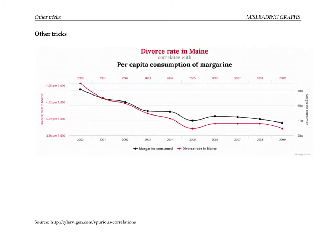Finally, what do you think about this graph? It shows the divorce rate in Maine as a red line, and per capita consumption of margarine — let's assume also in Maine — as a black line. The lines certainly track with each other, but putting them together on the same chart seems to imply there might be a causal relationship, which would be bizarre. In fact, if you look a little closer, the scales on the y-axis have nothing to do with each other. Putting two graphs together with different scales can be a red flag for funny business — trying to show a relationship where there is none.